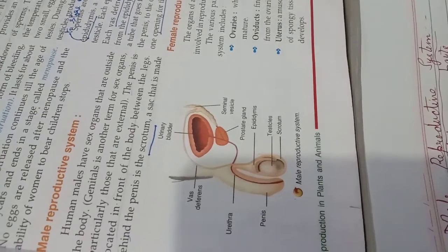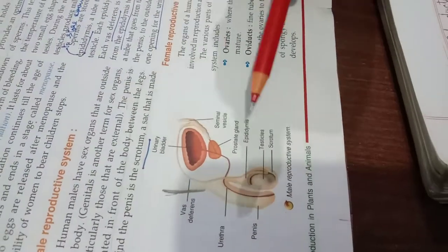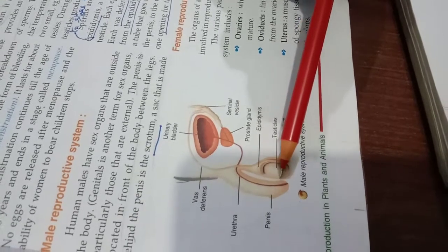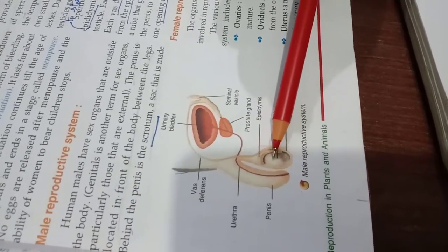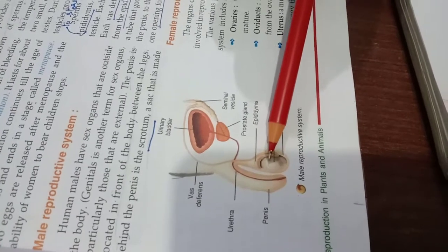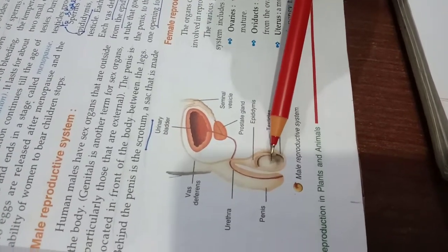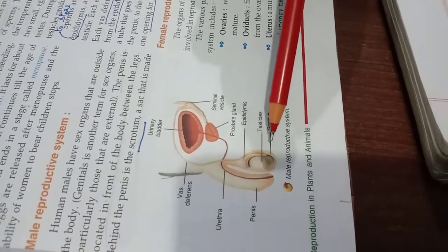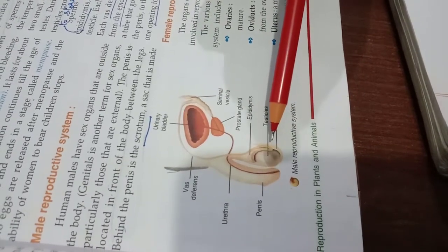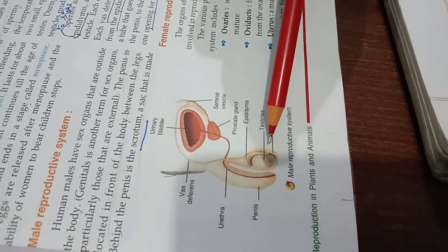What are the male reproductive system organs and its parts? As you can see in the diagram, the male reproductive system consists of a pair of testes which is the primary sexual organ. Their main function, or this testes also known as testicles, their main function is to produce sperms and the hormone testosterone.